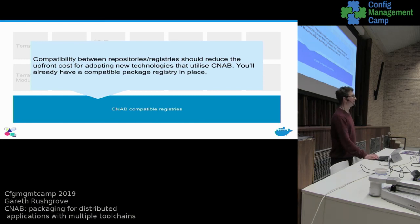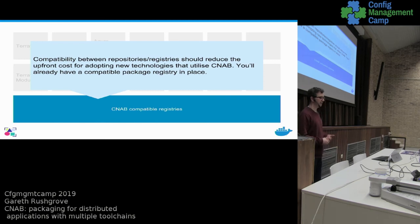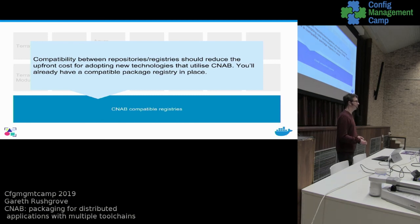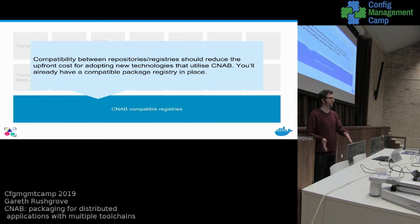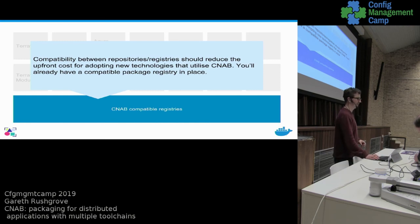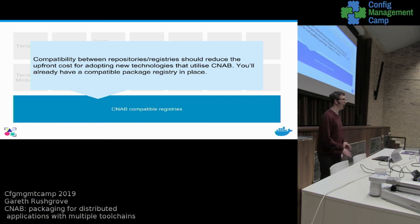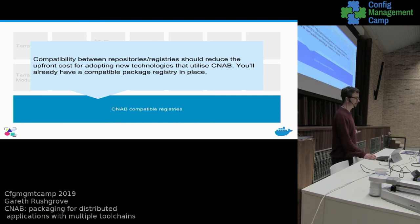There's basically no compatibility between registries and repositories. That actually raises the upfront cost for adopting new technologies. If packages are useful and your organization is using lots of different tools, you're probably running multiple different package repositories — loads of them. Every time you get a new technology you go: "how do we run another repository?" It's operational heavy lifting: why are you running multiple repositories that are all slightly different, all needing different characteristics? Can we agree at that level and make things easier?